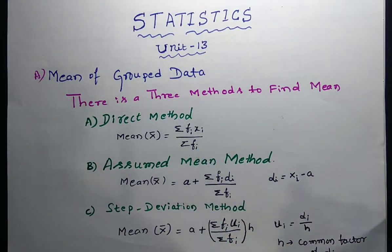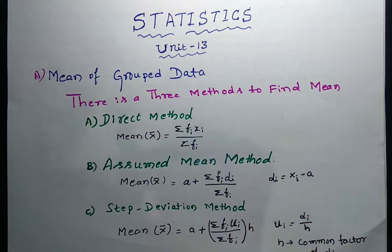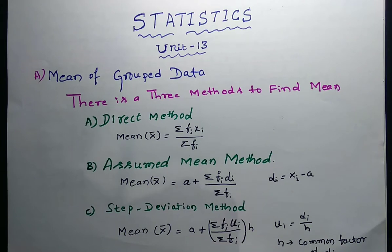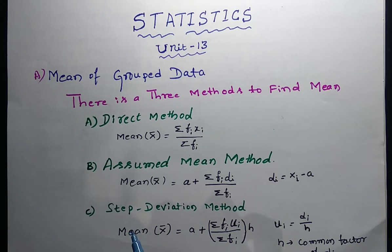When do we use each method? We use the direct method when fᵢ and xᵢ are small numbers. If fᵢ and xᵢ are larger numbers, we go for the assumed mean method or step deviation method. For the step deviation method, we use it when dᵢ = xᵢ − a has a common factor h. If dᵢ does not have a common factor, we use the assumed mean method.